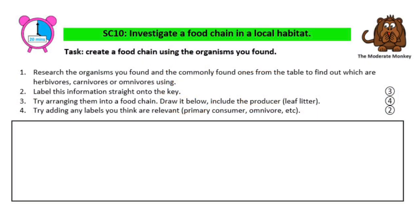Moving on to SC10: investigate a food chain in a local habitat. For this task, you need to research the organisms you found — or all the commonly found ones from the table — to find out which ones are herbivores, omnivores, or carnivores. Then you need to create a food chain. It can be a really simple food chain, but it has to include the organisms from that table or the ones you found.